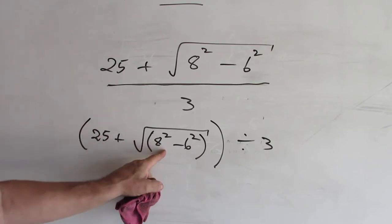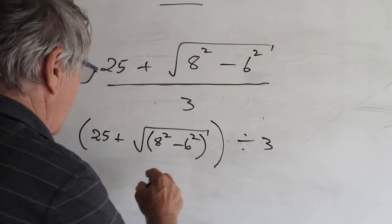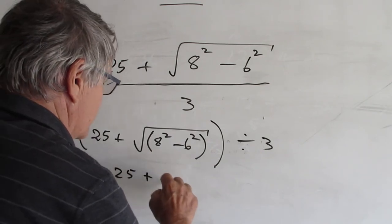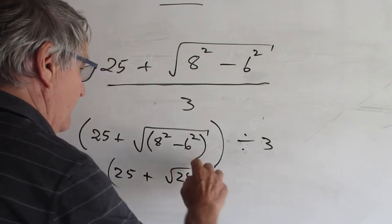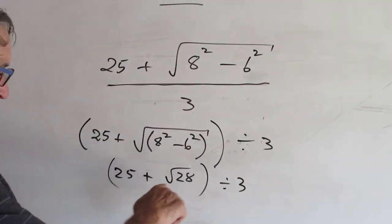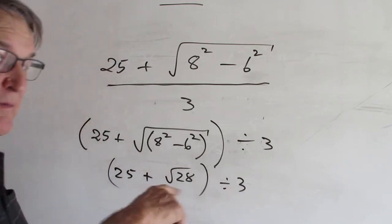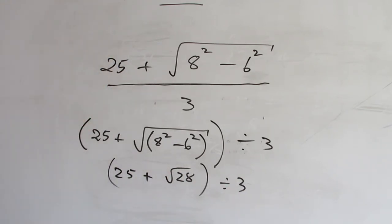Let's try and do it. 8 squared is 64. 6 squared is 36. So that would be 28, I think, won't it? 64 minus 36. We are at 28. So 25 plus the square root of 28, which is not very clever, divided by 3. This is somewhere a bit more than 5. So this is a little bit more than 30. So our answer is going to be a little bit more than 10.